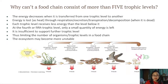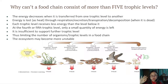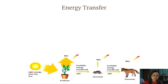The ecosystem may become more unstable if you have more than 5 trophic levels, which is why food chains usually end after 5 trophic levels. Energy is eventually lost as heat to the surroundings.